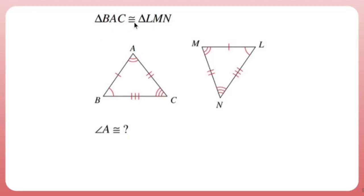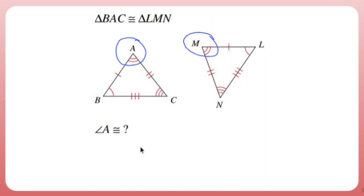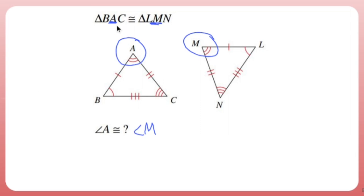Triangle BAC is congruent to triangle LMN. It asks what angle A is congruent to. Angle A has two tick marks, matching angle M which also has two tick marks — so angle A is congruent to angle M. Alternatively, A is the second letter in BAC and M is the second letter in LMN. From the congruency statement, C corresponds to N and B corresponds to L.